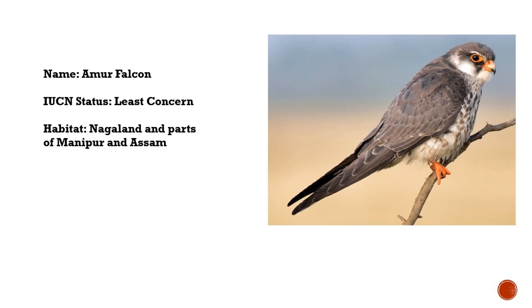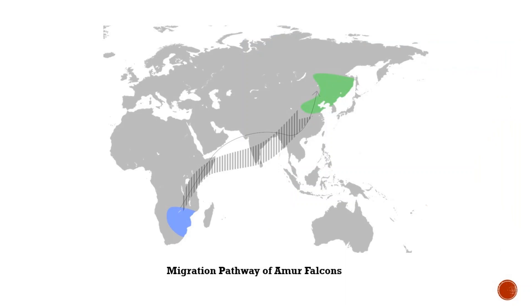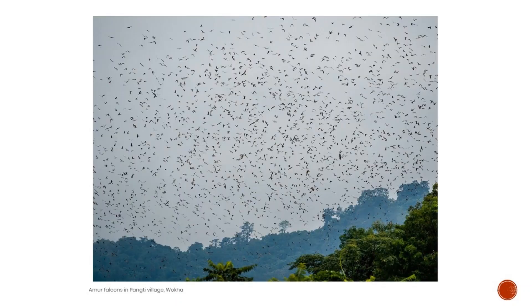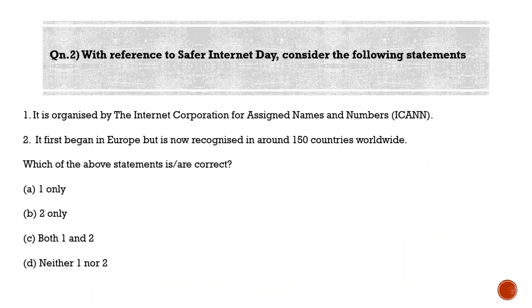Next is the Amur Falcon, a least-concern species and a small raptor of the falcon family that breeds in Siberia and northern China. They migrate to winter in southern Africa, and you can see their migration pathway in the picture. They visit India while doing so, particularly in Nagaland and parts of Manipur and Assam. This migration happens in large numbers, making it a great spectacle, as seen in the picture — the migration of Amur Falcon spotted at Pangti village in Nagaland.